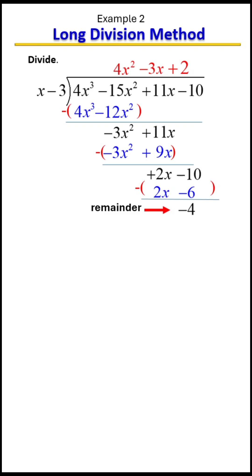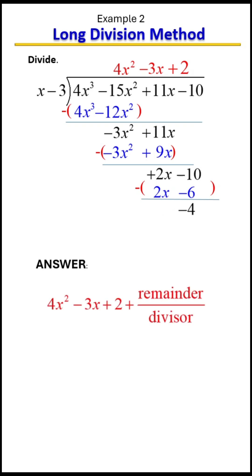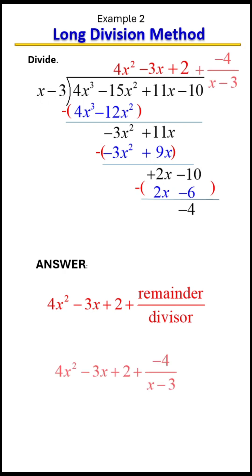When you have a remainder, you must attach it to the back of your answer in the form of a fraction, with the remainder on top and the divisor on the bottom. So on top we have negative 4, and on the bottom is the divisor, which is always on the outside — in this case, x minus 3. So our final answer includes the fraction negative 4 over (x minus 3).